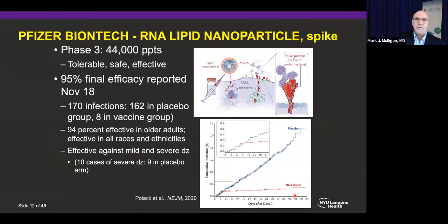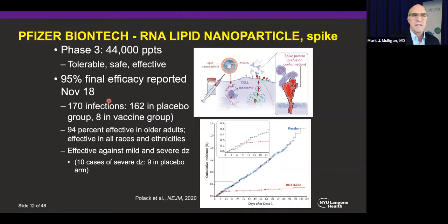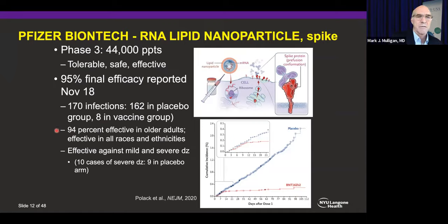The first two EUA-approved vaccines are strikingly effective. For the Pfizer-BioNTech lipid nanoparticle vaccine, there were 170 infections in the final efficacy analysis — 162 were in the placebo group and only 8 in the vaccine group. These were symptomatic COVID cases one week after the second vaccine: 94% effective. This was true in older adults, all races and ethnicities, and particularly true for both mild and severe disease.